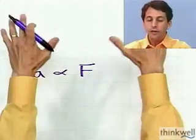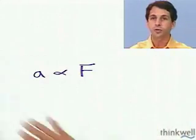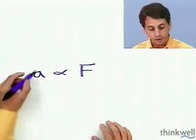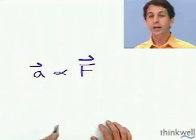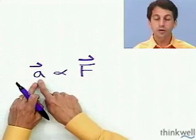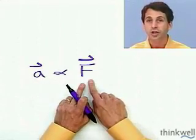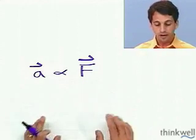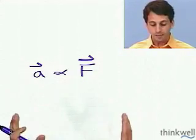If you go, not on this little one-dimensional air track, but onto an air hockey table, you'll discover that the acceleration vector is proportional to the force vector. The direction of the acceleration is the same as the direction of the force that you apply. So that's one observation that Newton made.